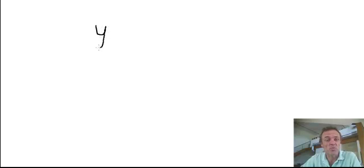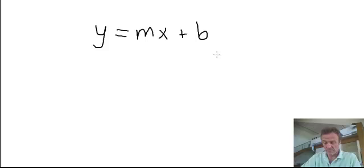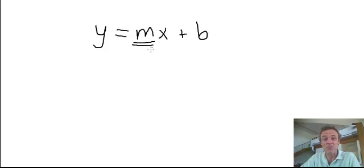Some of you are familiar with this: y equals mx plus b. That is the slope-intercept form of the equation, the graph. What we find here is that this number next to the x, when it's written as y equals, is the slope — that is the slope of the graph.